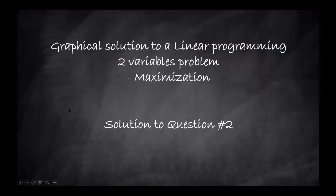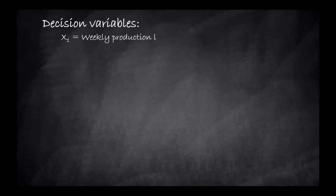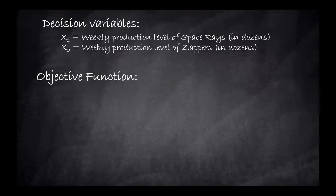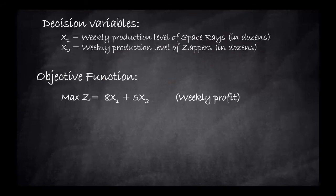Hello and welcome to the solution to question number two, dealing with two decision variable problems. The first decision variable is the weekly production level of space rays in dozens, and the second one is the weekly production level of zappers in dozens. The objective function is to maximize profit, defined by $8 times x1 plus $5 times x2 — that's the weekly profit.